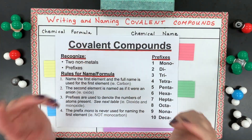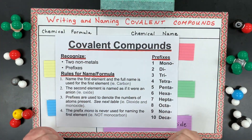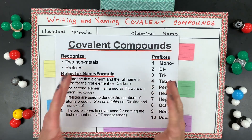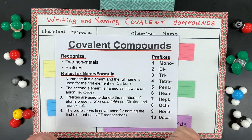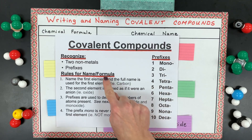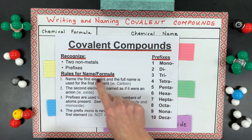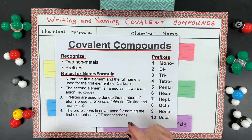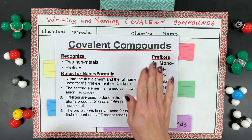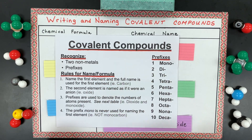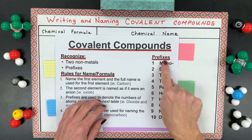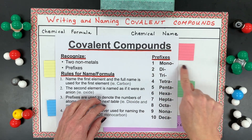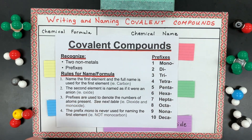Writing and naming covalent compounds is an important skill to have in chemistry. The first thing you need to do is write down the rules for writing and naming covalent compounds. The second thing is to write down the prefixes — you may even have to memorize these prefixes.